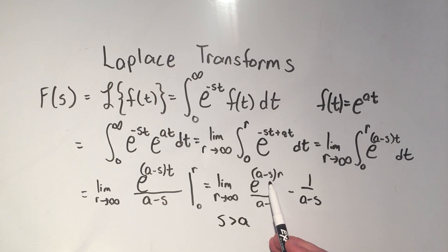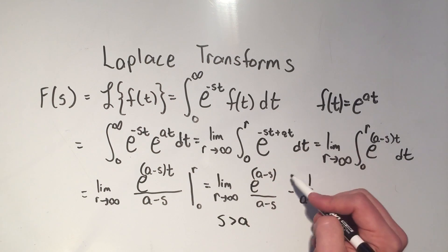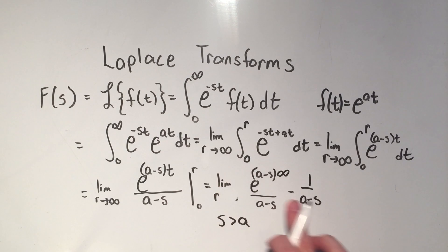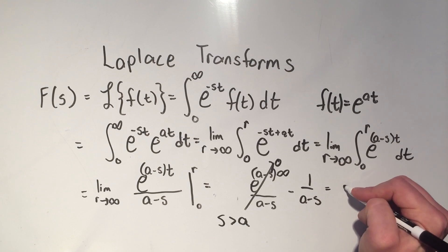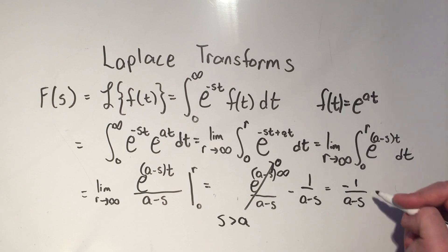Now, if I plug in infinity for r, right here, if I evaluate this limit, the limit of a constant is a constant, so I don't have to worry about that. But here, I need the minus to take over. So basically, this is e to the minus infinity, which goes to 0. And that's going to happen with almost all of these Laplace transform problems. So, as long as you have this assumption, this part will go to 0. And I get minus 1 over a minus s, which is the answer.